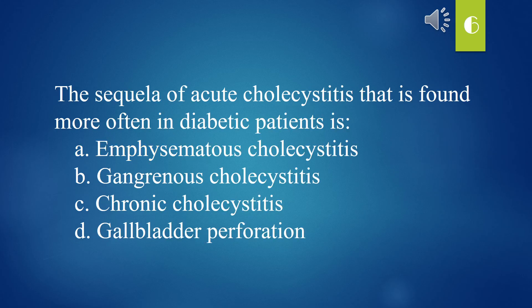The sequelae of acute cholecystitis that is found more often in diabetic patients is: A. Emphysematous cholecystitis. B. Gangrenous cholecystitis. C. Chronic cholecystitis. D. Gallbladder perforation. The answer is A. Emphysematous cholecystitis.